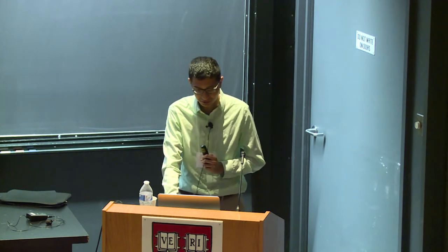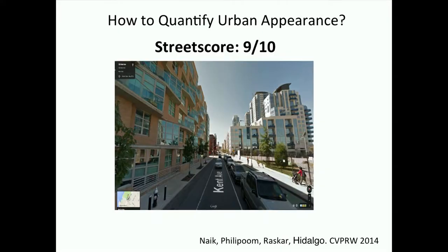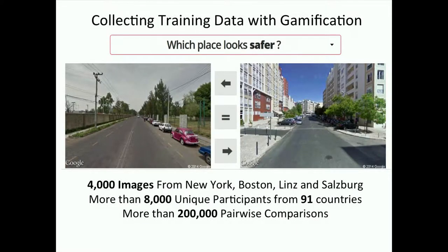For quantifying appearance, we used a metric called Street Score, which I had developed earlier in my PhD. Street Score is essentially a metric for perceived safety of a place — an algorithm that can look at a picture and tell you how safe that place would look to a human observer. To develop it, we created a crowdsourced online game showing people Street View pictures side by side — 4,000 pictures from New York, Boston, and two other cities. We asked people to pick which place looks safer, and collected more than 200,000 pairwise comparisons from 8,000 participants.